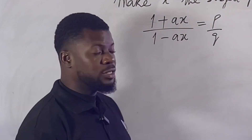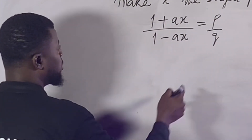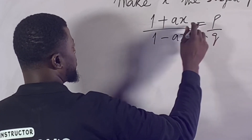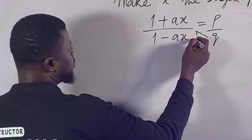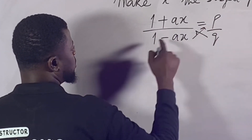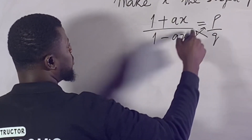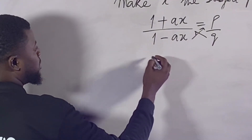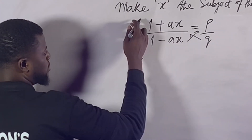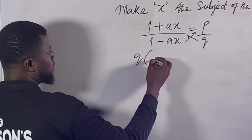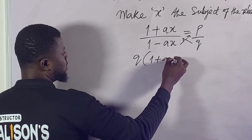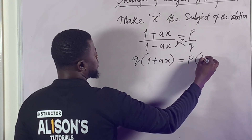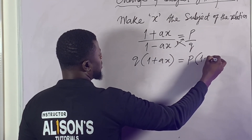So the best way to approach this problem is to cross-multiply. So I will use q to multiply by 1 plus ax, and also 1 minus ax to multiply by p. So let's do that immediately. So what do we need to start off with? Let's use this first: q times (1 plus ax) equals p times (1 minus ax).